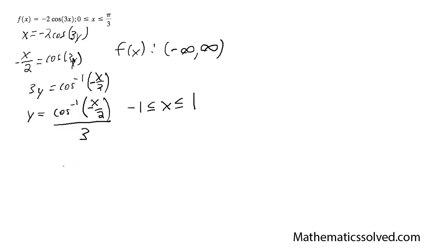So in order to solve the bounds on this, I'm going to set each case here. I'm going to do negative x over 2 is equal to negative 1, and I'm going to do negative x over 2 is equal to 1.